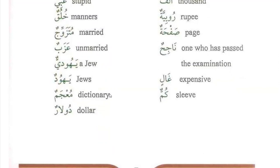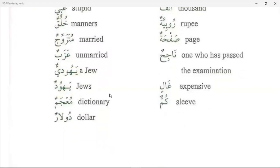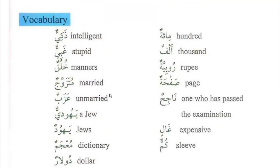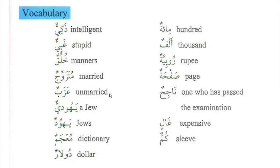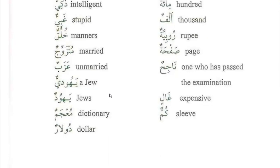Asabun. Yahudun — etchus. Muchamun — dictionary. Dullarun. Mishkinza. Aslamu alaikum. Wa alaikum wa salaam. 100 — miyatun. 1000 — alpun. Rupay — rubijatun. Page — sapahatun. One who has passed the examination — Najihun. Expensive — Galin. Sleeve — Kumun.